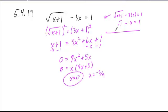Plug in negative 5 ninths. Negative 5 ninths plus 1, which is 9 ninths, minus 3 times negative 5 ninths, does that equal 1? A negative times a negative is a positive. So we get square root of 4 ninths, which is 2 thirds, plus 5 thirds where the 3s cancel, does that equal 1?